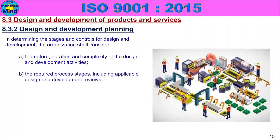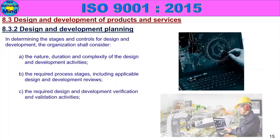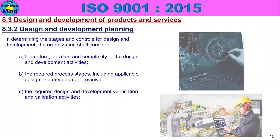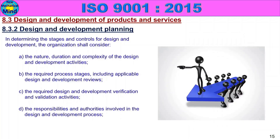The required process stages, including applicable design and development reviews — how many stages are needed — and the required design and development verification and validation activities. The design and development activities perform output and validate the activities. The responsibilities and authorities involved in the design and development process are defined and authorized to carry out the process.